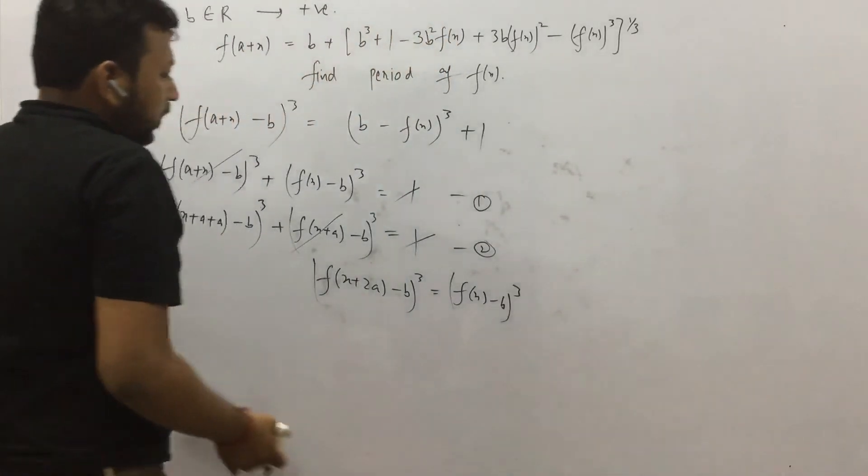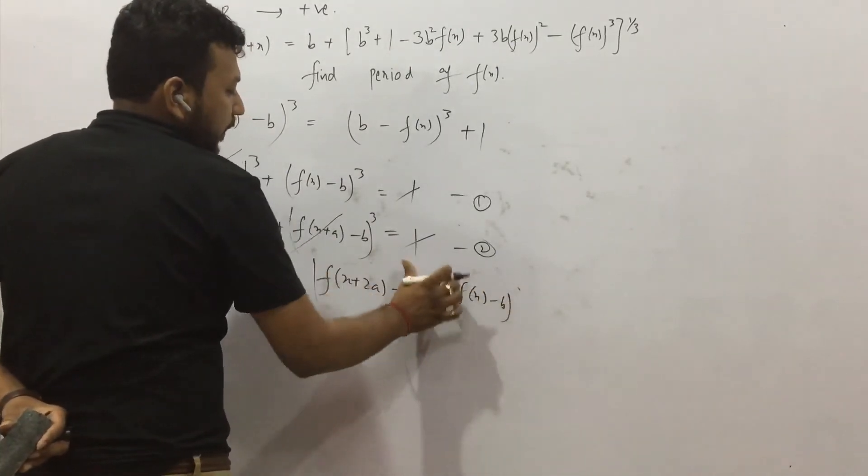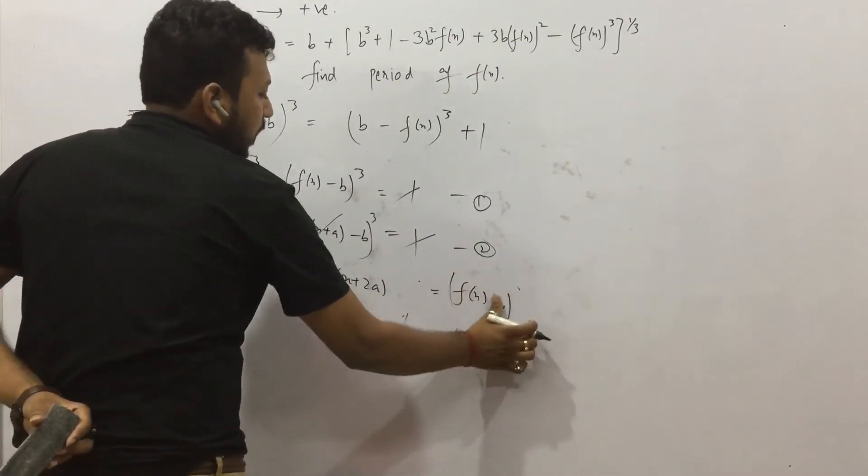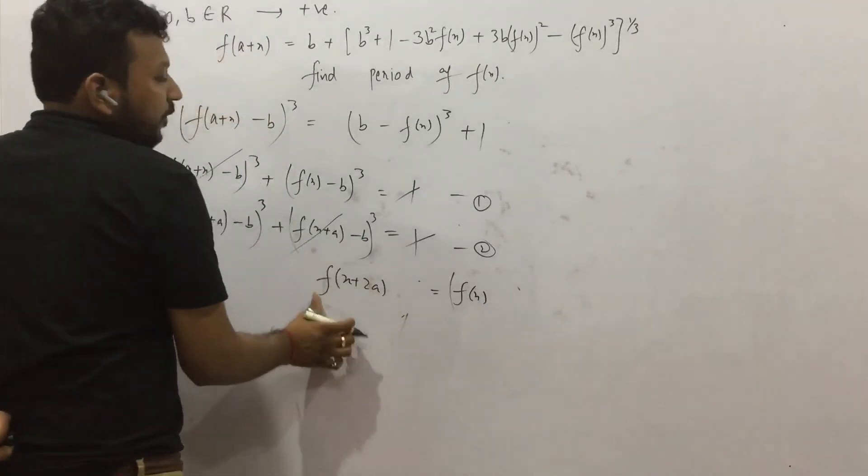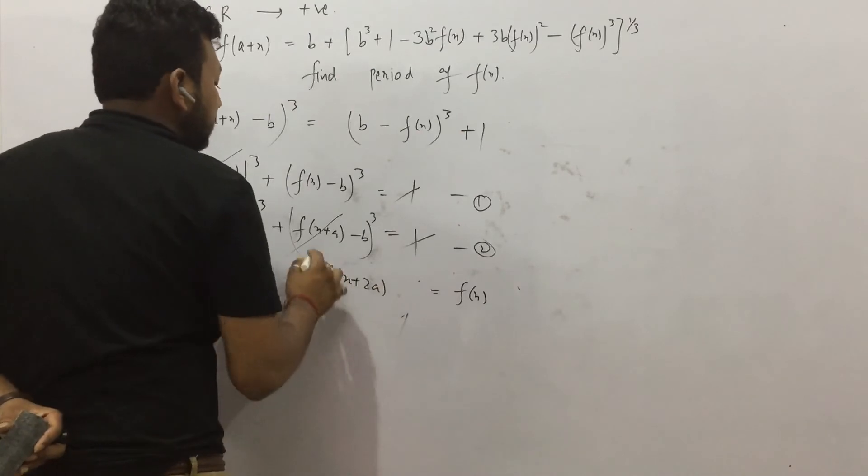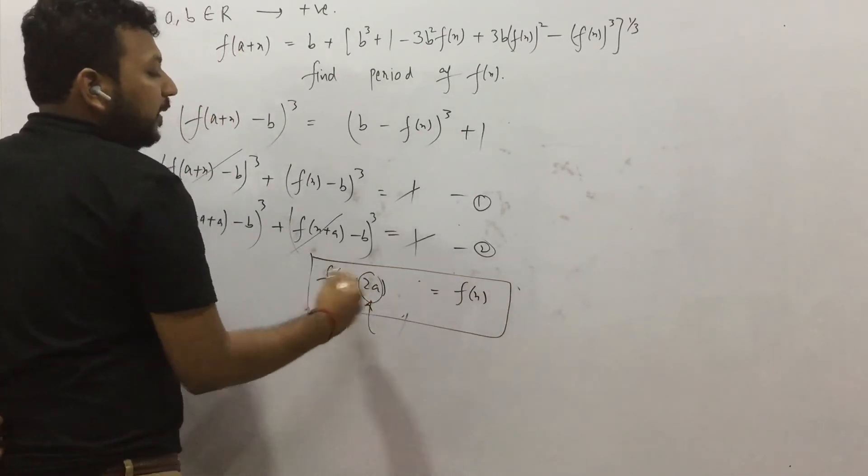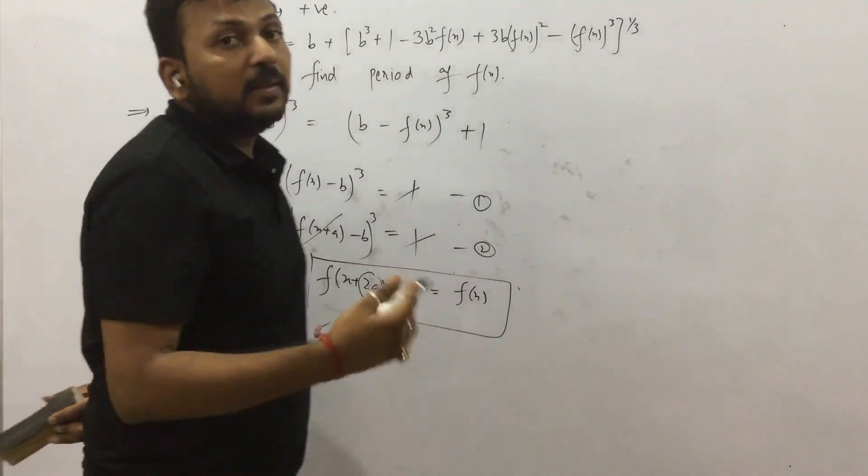There are smaller tips and tricks to crack the exam. So the cube is gone, then again minus b is gone. And you have this expression, which I was talking about earlier, that f(x + 2a) equals f(x). That means it is periodic. And what is the period? It is 2a. After 2a interval, it is repeating itself. It is giving the same value.